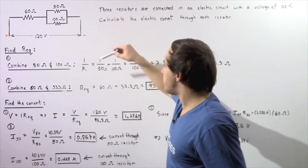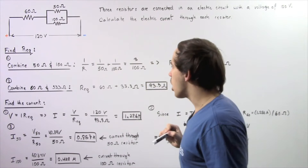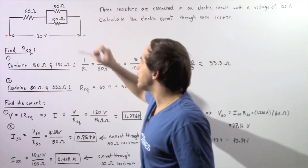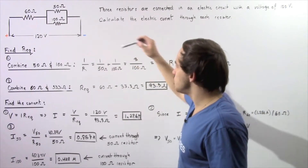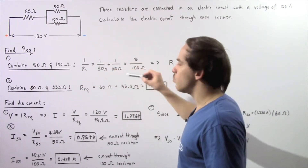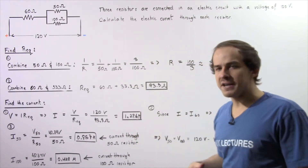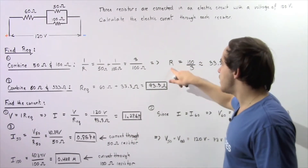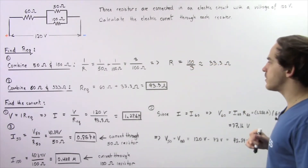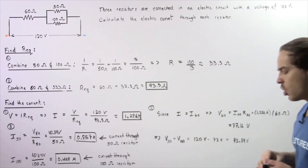We can do it by simply using this equation. One divided by R, where R is the resistance of these two combined resistors, is equal to 1 divided by 50 ohms plus 1 divided by 100 ohms. That gives us 3 divided by 100 ohms, which implies that R is equal to 100 divided by 3, approximately equal to 33.3 ohms.